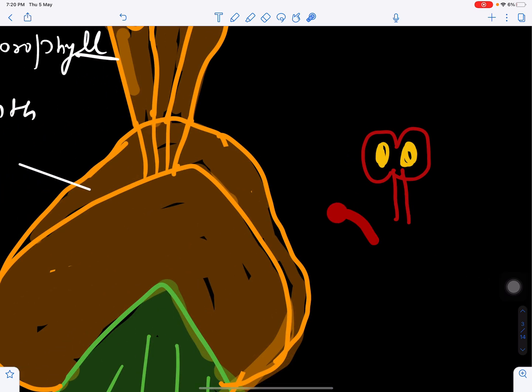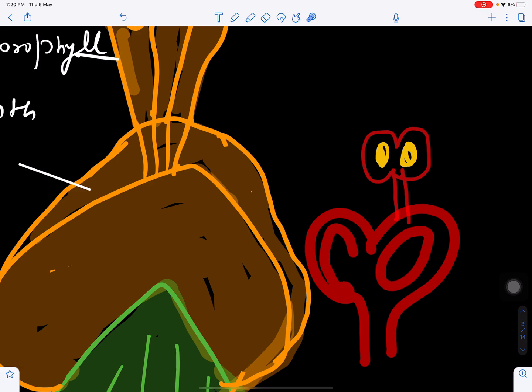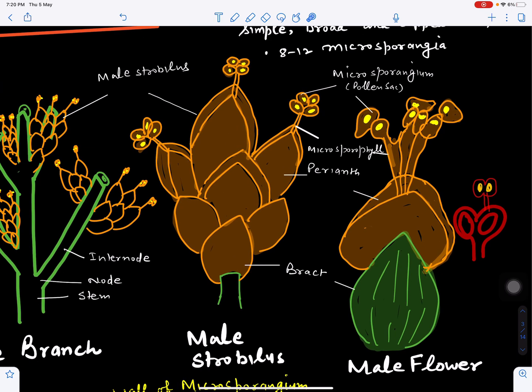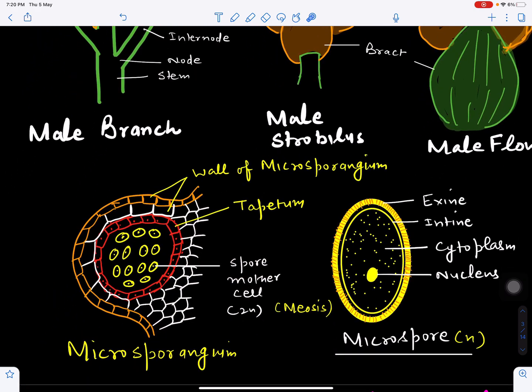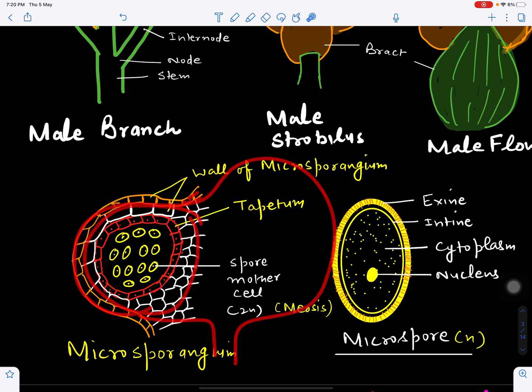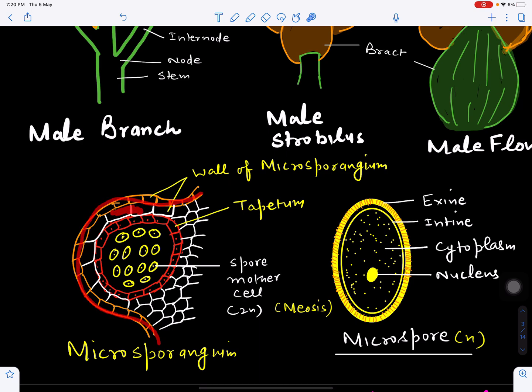The microsporangium is bounded by a wall. The outermost layer is the epidermis, then a wall layer made up of parenchymatous tissue. The innermost layer, which binds the sporogenous tissue, is called the tapetum. This helps in nourishment.